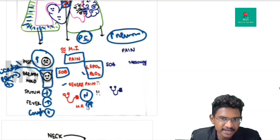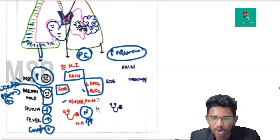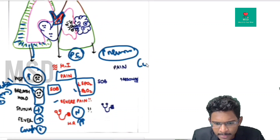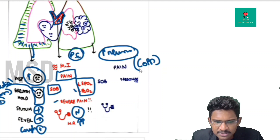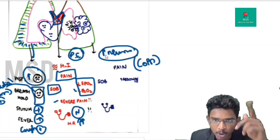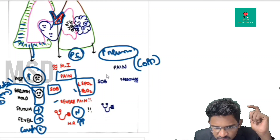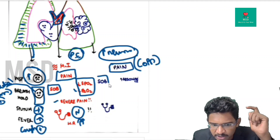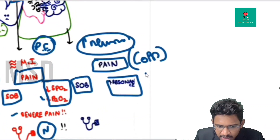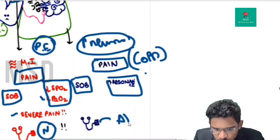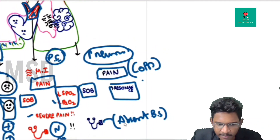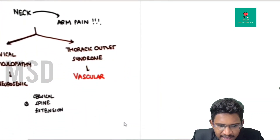In spontaneous pneumothorax — in a patient with COPD or bullous lung disorders — a bulla ruptures, causing accumulation of air, sudden onset chest pain, and shortness of breath. On auscultation, there is hyper-resonance and absent breath sounds, differentiating it from MI.